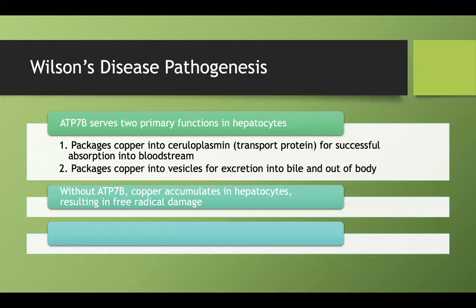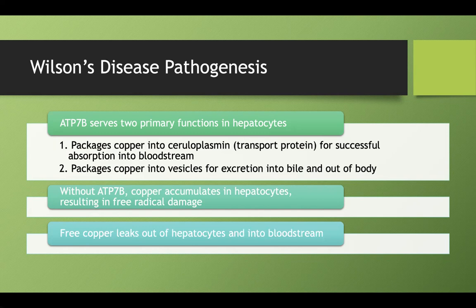If you have a defect in the ATP7B gene and don't have enough of that protein, copper accumulates in hepatocytes. Similar to hemochromatosis where excess iron undergoes a Fenton reaction causing free radical damage, copper will also accumulate and undergo a similar reaction causing free radical damage. If severe enough, the hepatocytes start to die, their membranes break, and free copper leaks into the bloodstream.